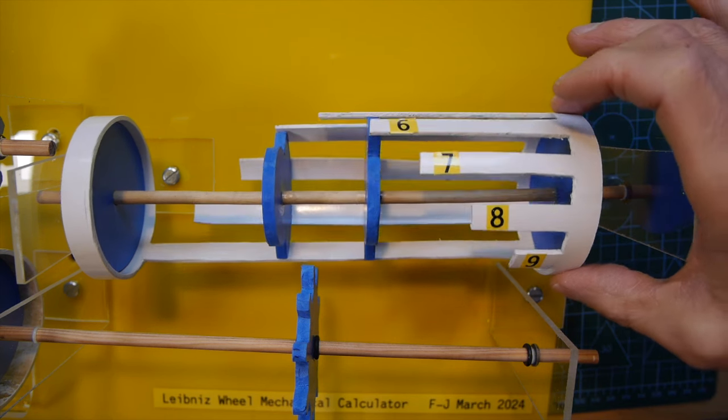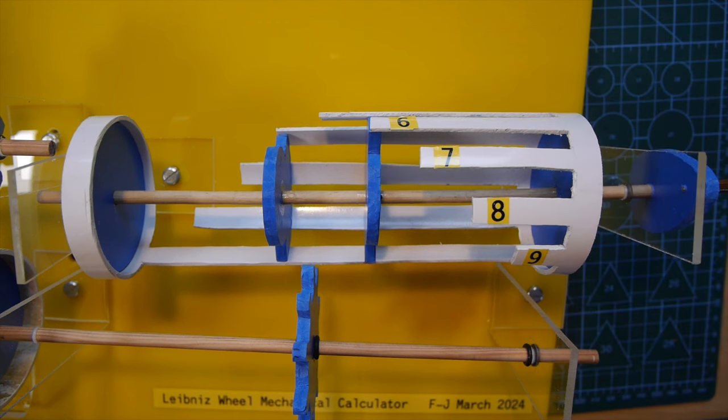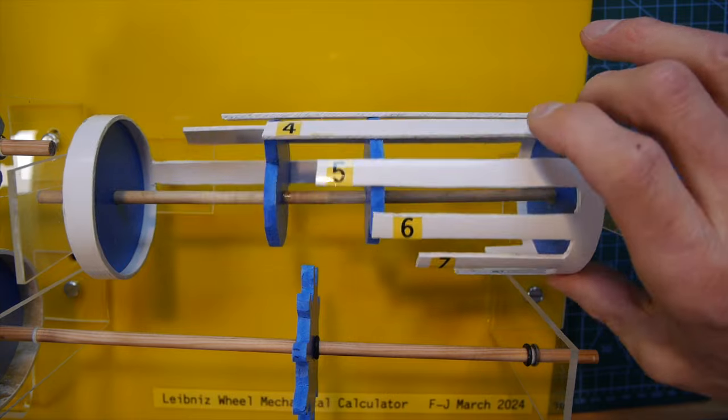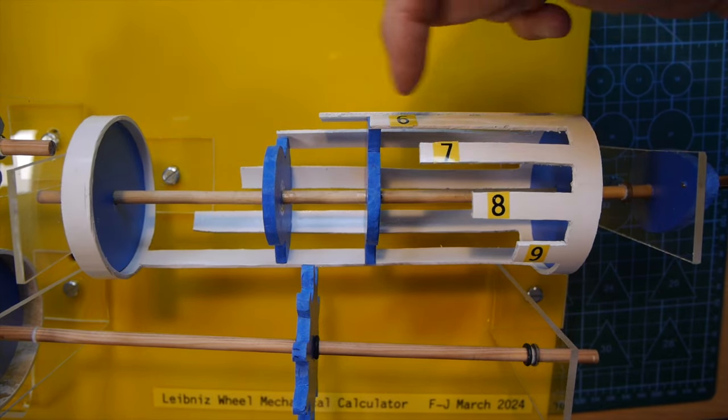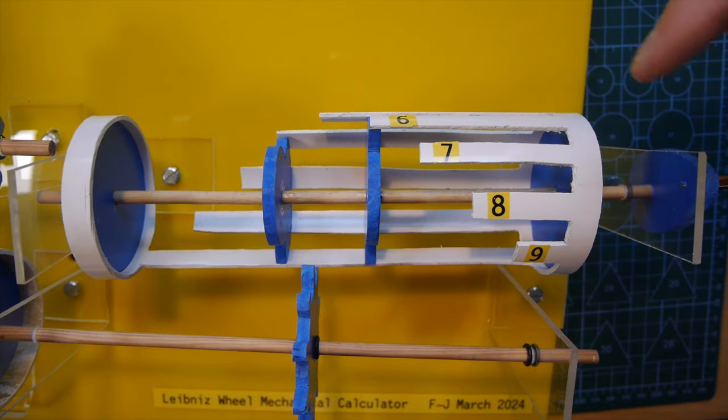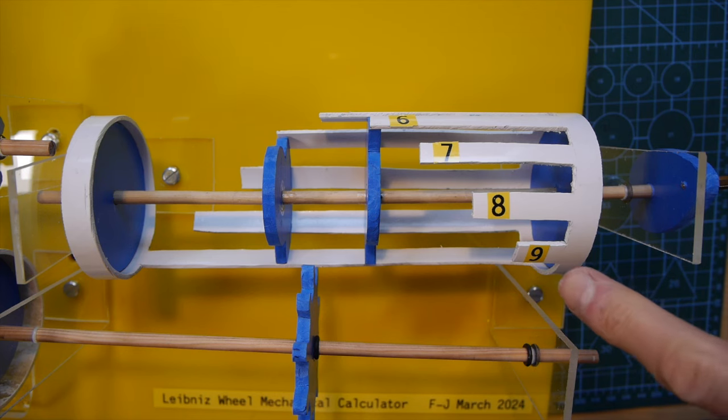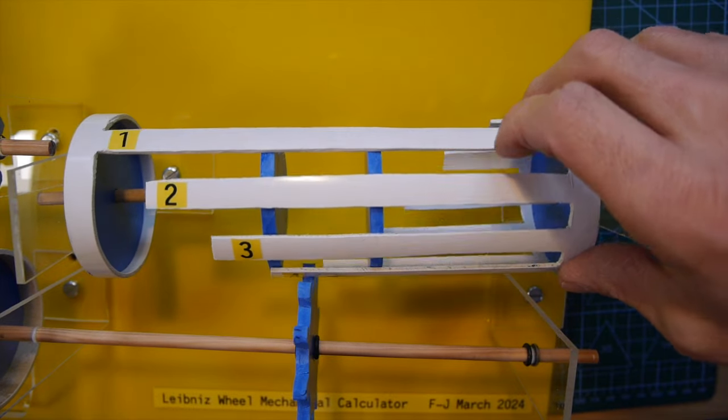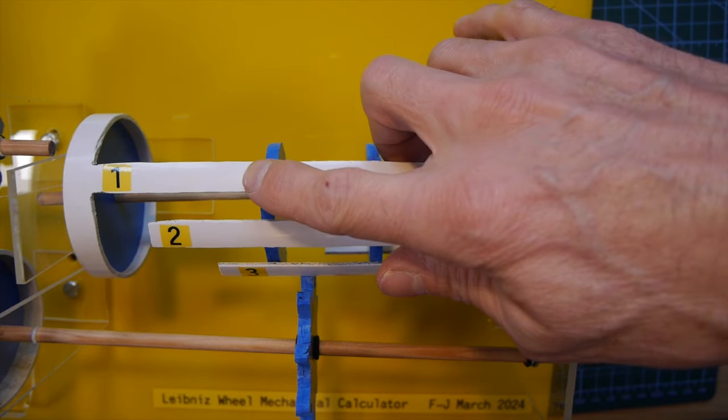So here's the Leibniz wheel itself and as you've seen a bit earlier on when I was building it, it consists of a drum with nine gear teeth on it and those gear teeth are all different lengths. The way I've built it is with nine then eight then seven then six going around and the longest of the gear teeth is number one.